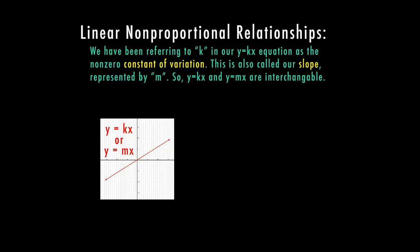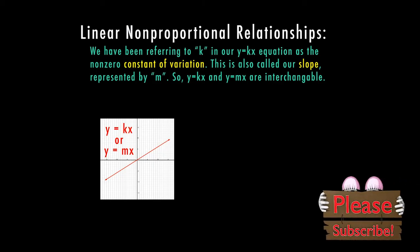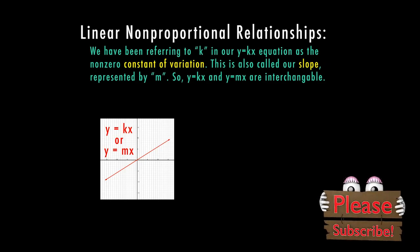We have this first graph, and we have seen one similar to this in another video. We have our y equals kx, or if you want to interchange it with m for slope, y equals mx. Either way, that is the constant of variation, which is telling us the rise and the run of our line here. Our line is going in the upward direction if we are reading it left to right, which means this is a positive slope.